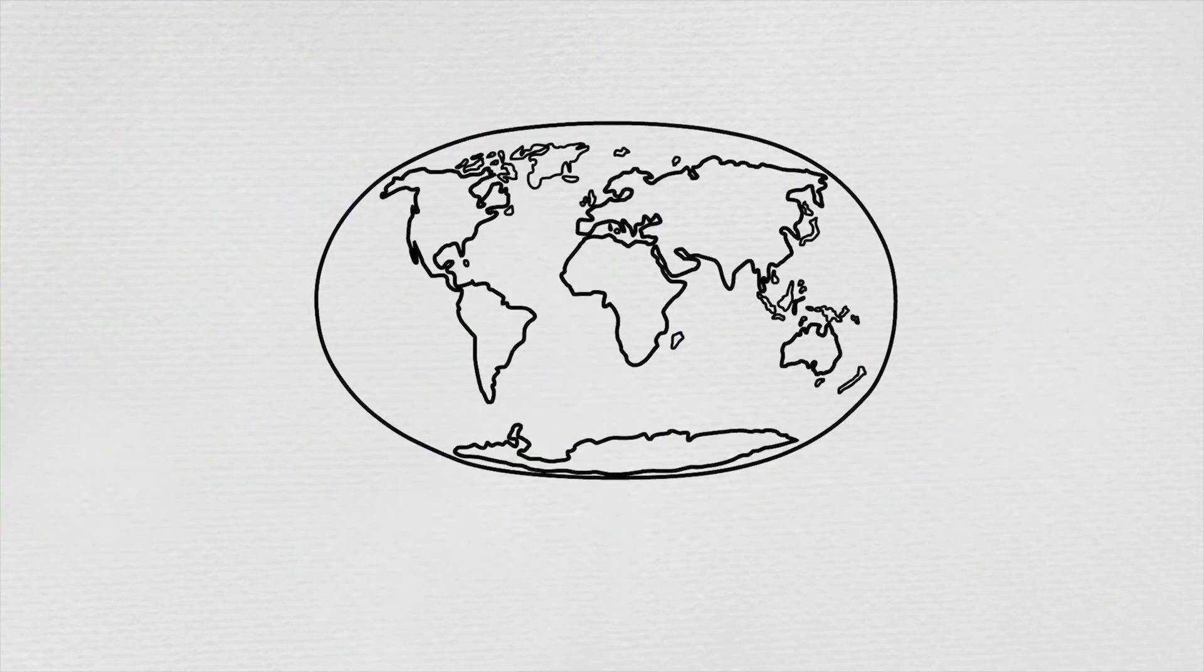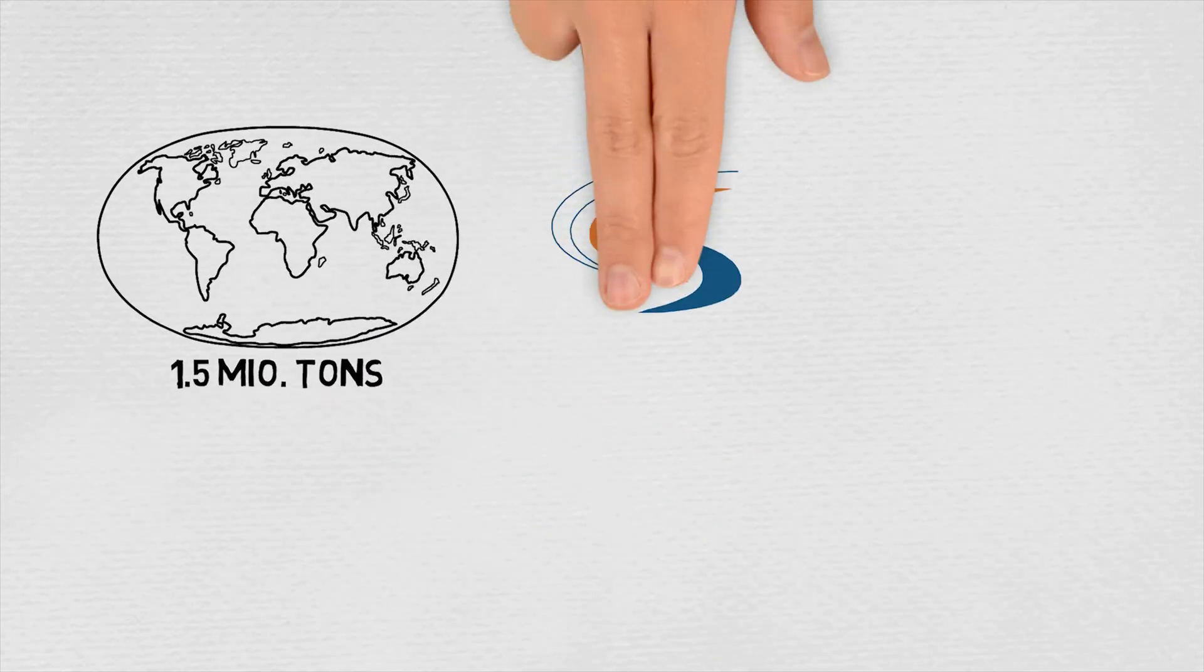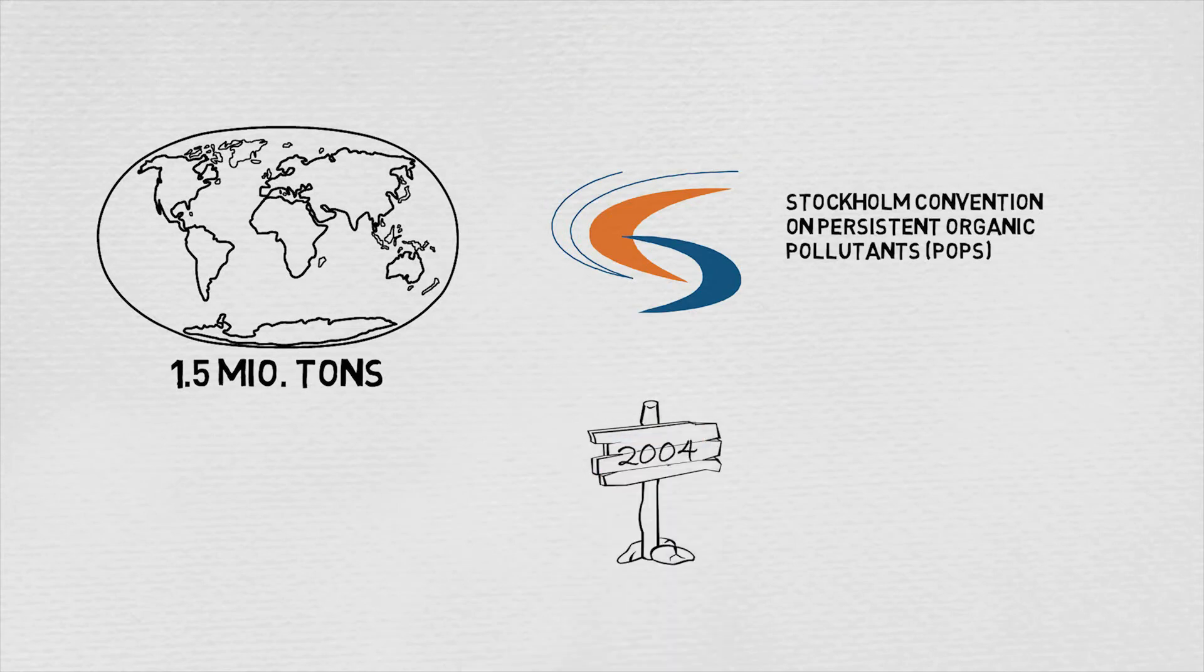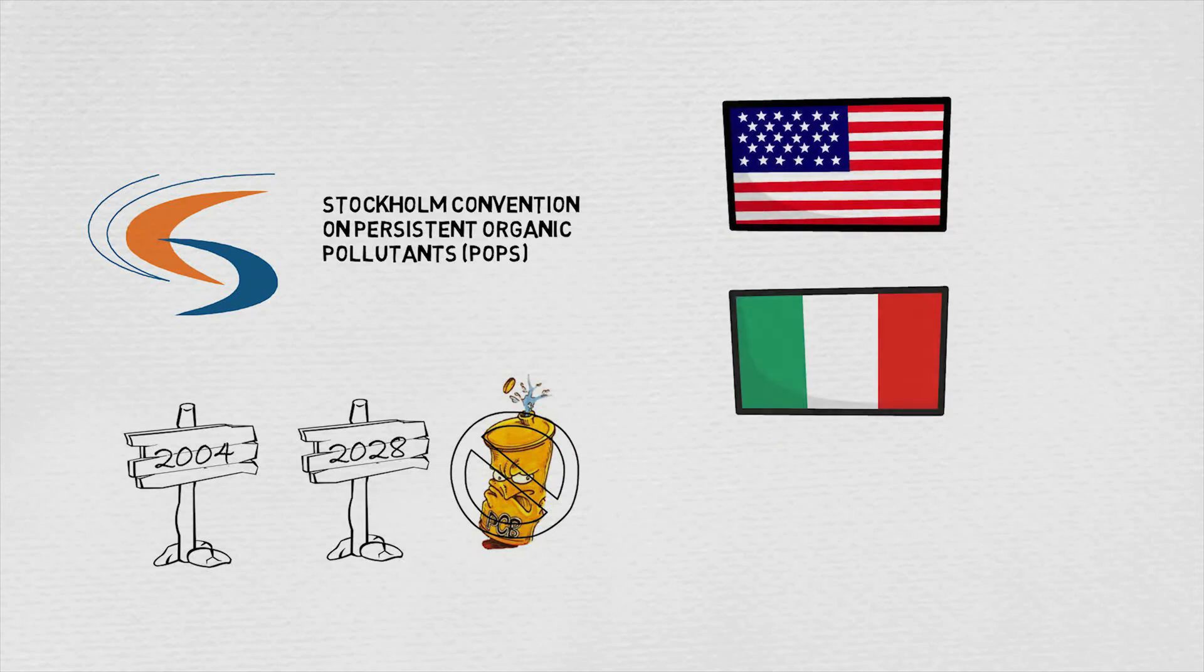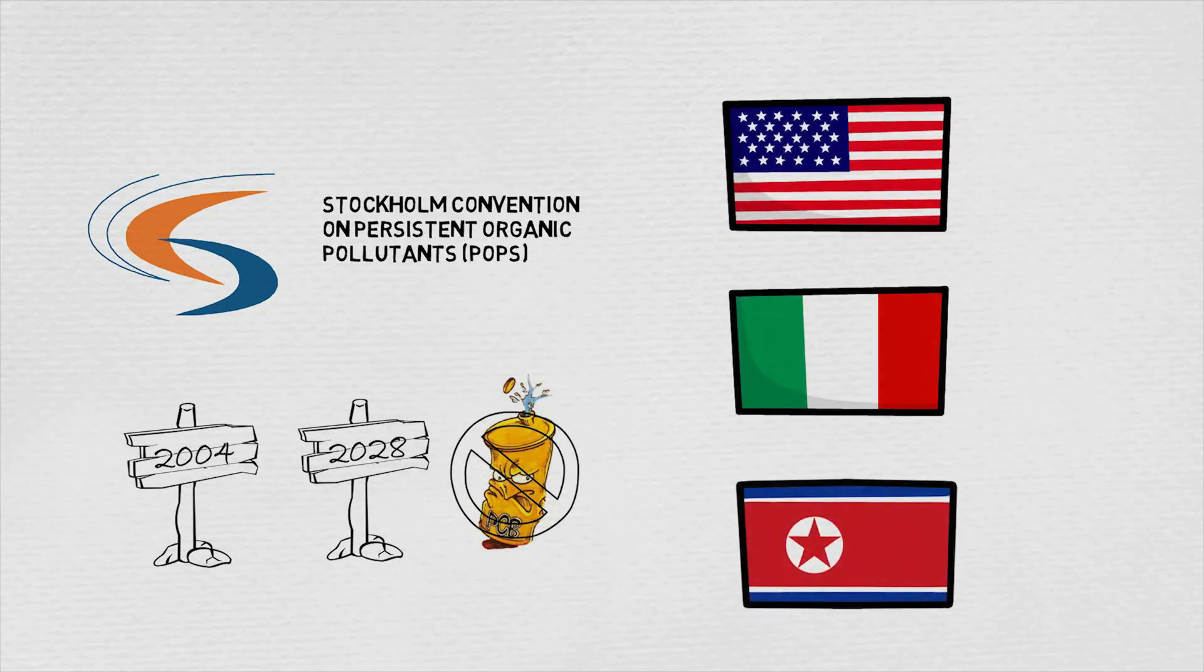Around 1.5 million tons of PCBs had been produced worldwide before its usage and production was prohibited by the Stockholm Convention in 2004. The convention also regulates the elimination of PCB containing equipment and liquids until 2028. Only very few countries, including the USA and Italy, haven't signed the convention. North Korea even produces PCBs nowadays, however only for its own use.